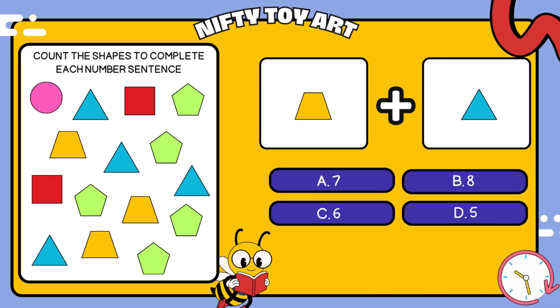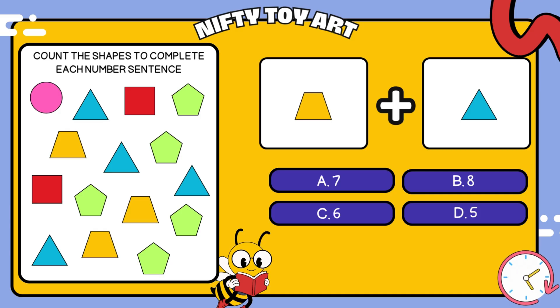I have a trapezoid plus triangle. How many all together? That's right, seven.